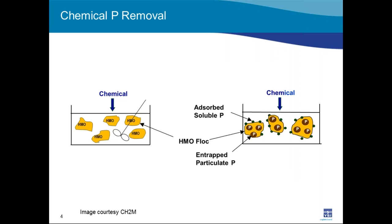The first application is chemical phosphorus removal. It's a fairly simple process that involves adding chemical to the water, forming flocs called HMOs — hydrous metal oxides. As these flocs are formed, soluble P adsorbs to them, and then particulate P gets trapped as the flocs continue to grow. When these flocs settle out, they are removed with waste sludge.